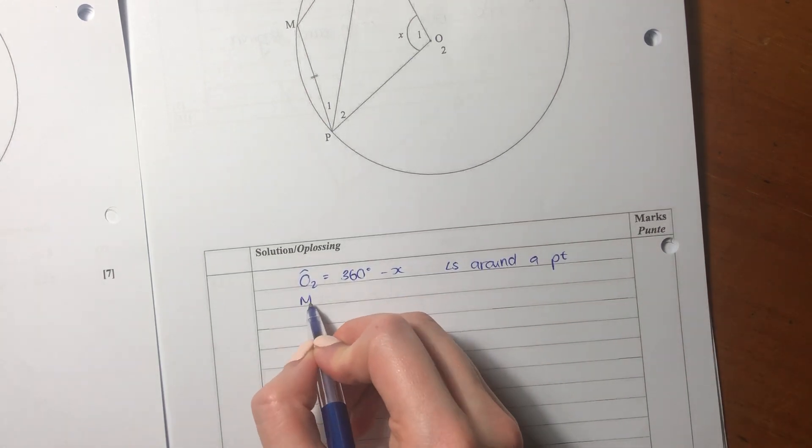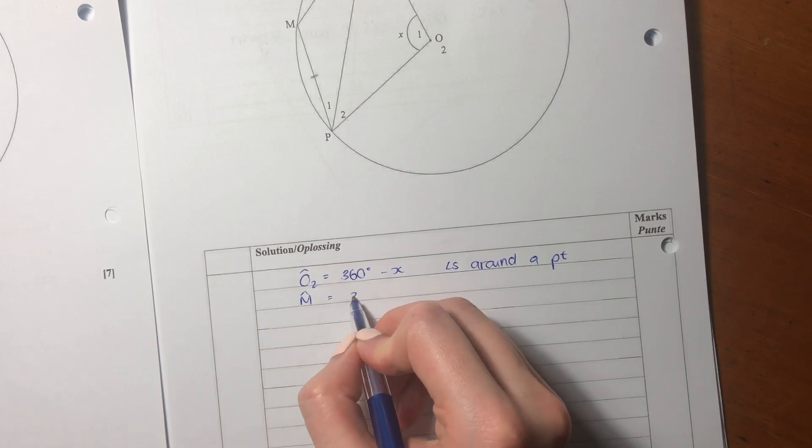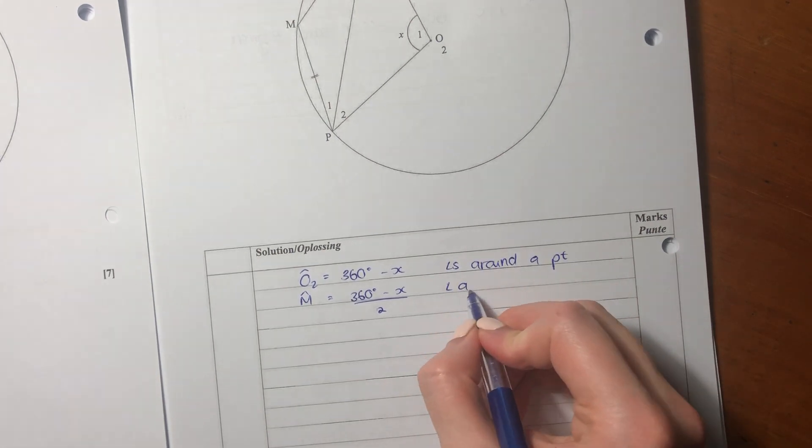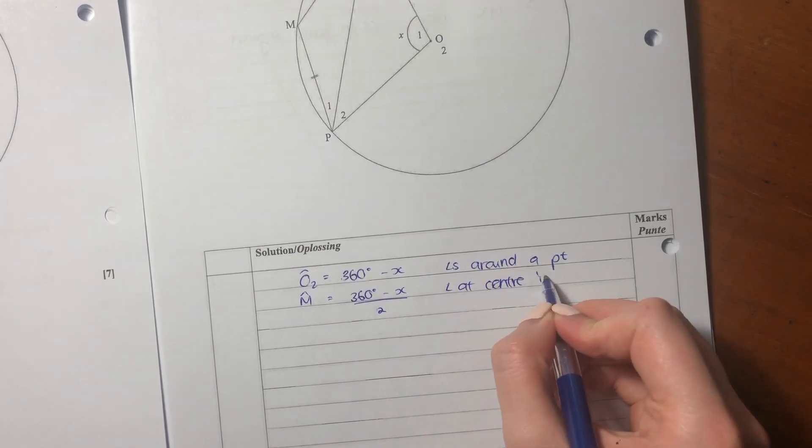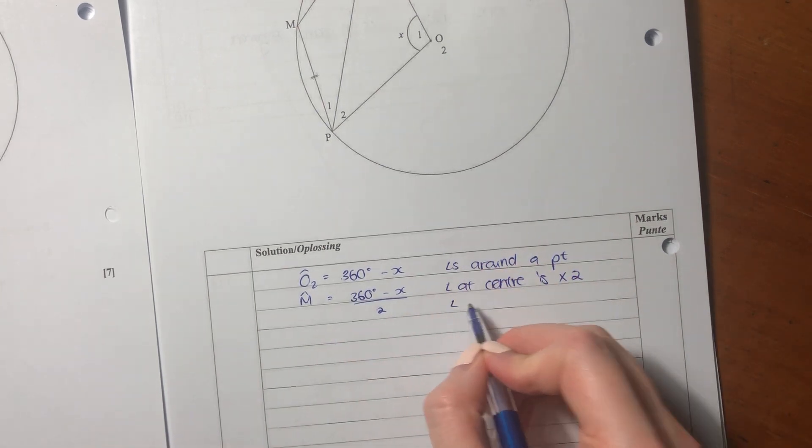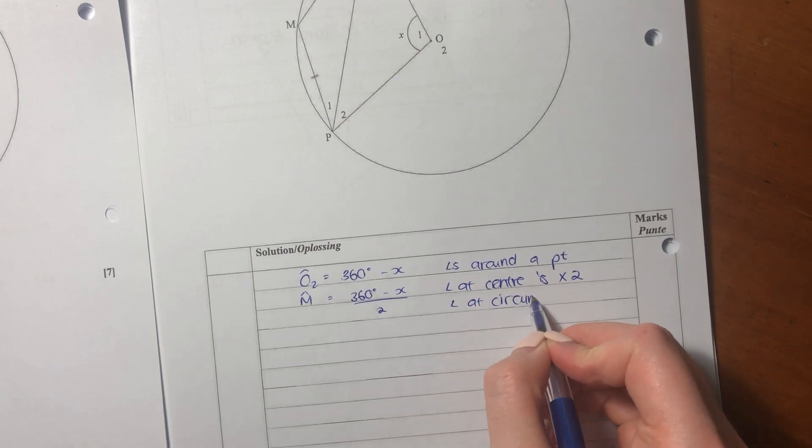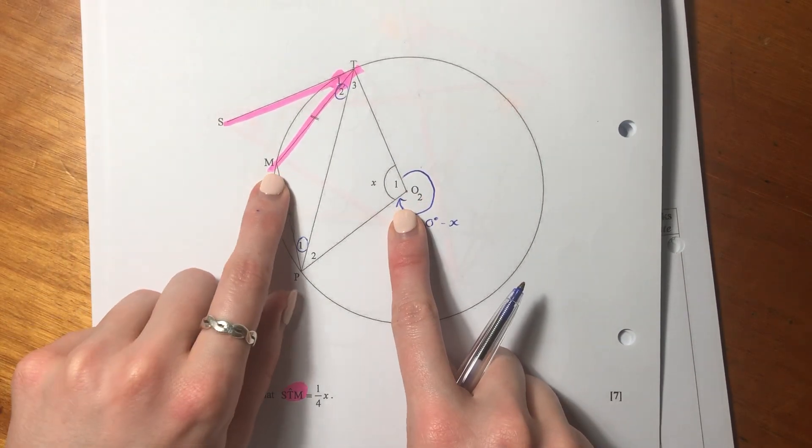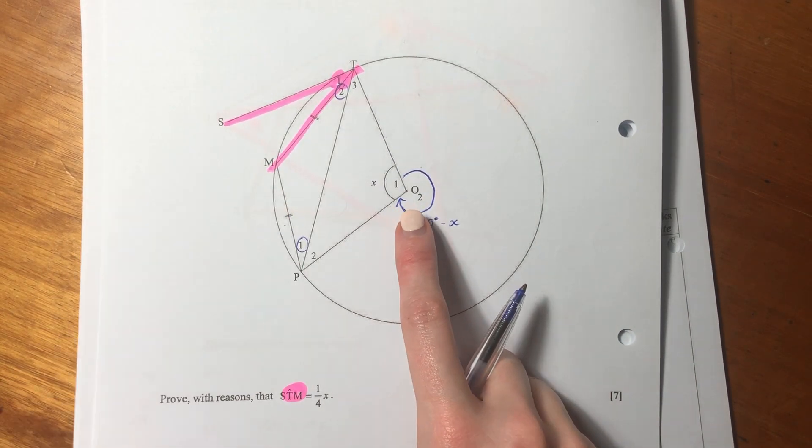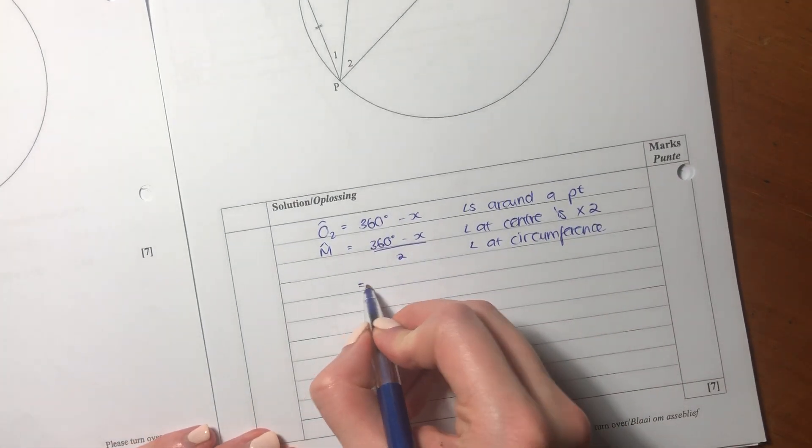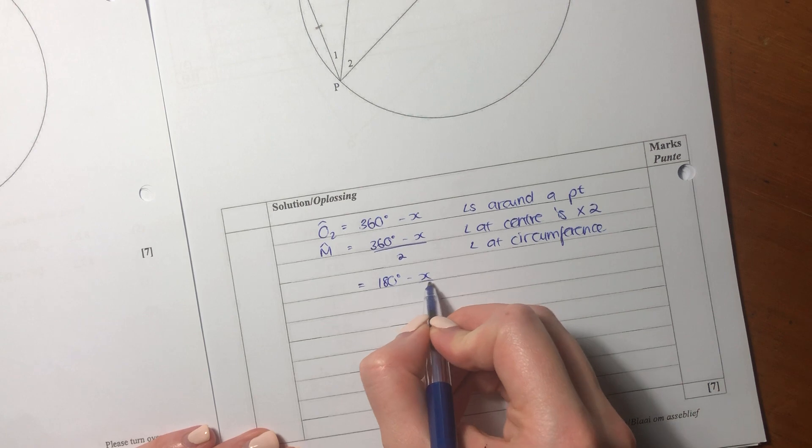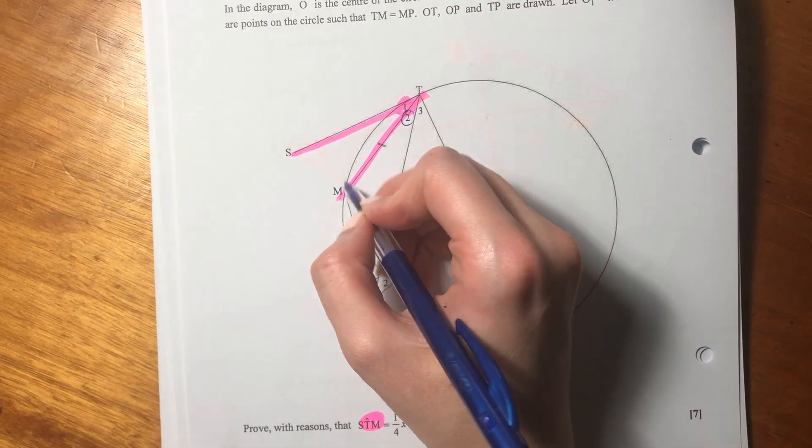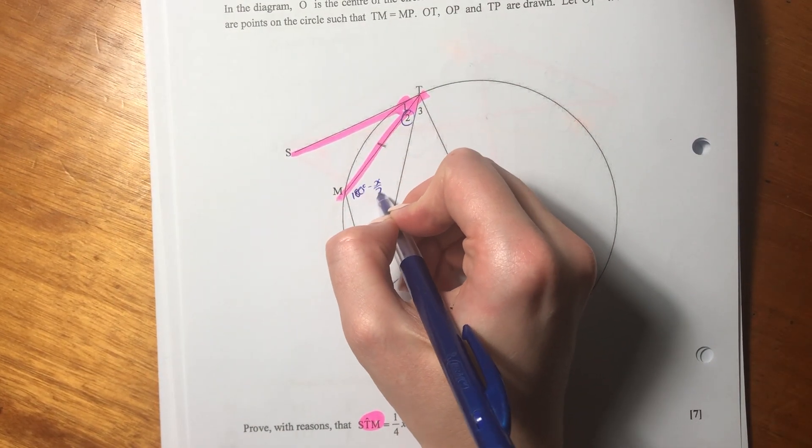Then we say, well, angle M equals 360 minus X all over 2. Because angle at center is two times angle at circumference. You should remember that reason. So basically it says whatever this angle is here, this angle here is half of it. So let's just neaten that up a little bit. So M equals 180 minus X over 2.